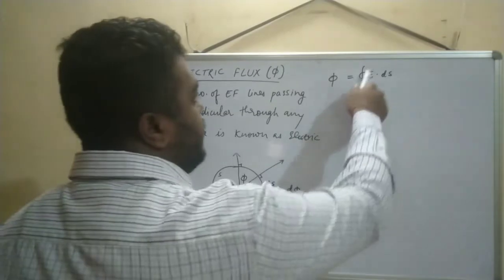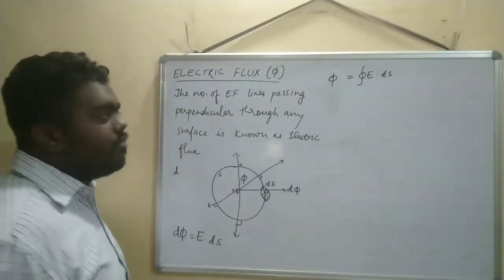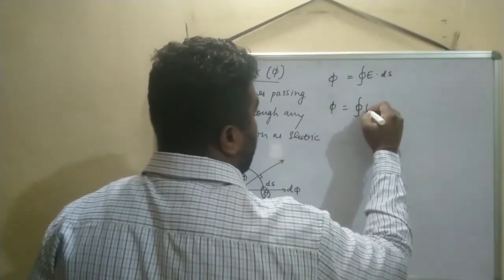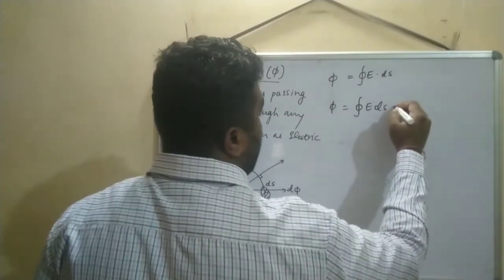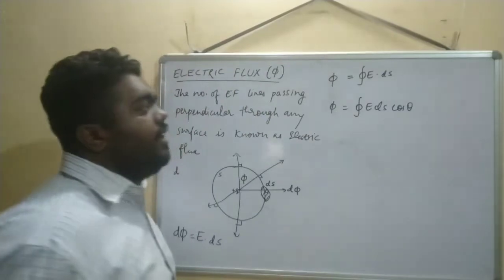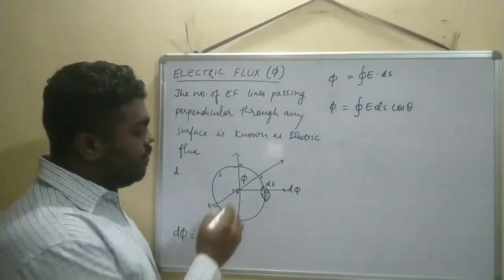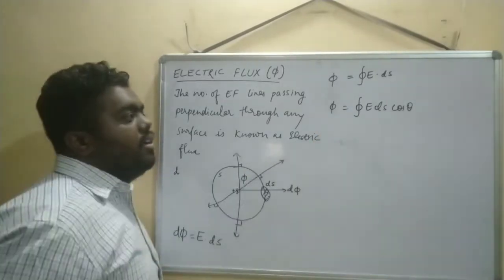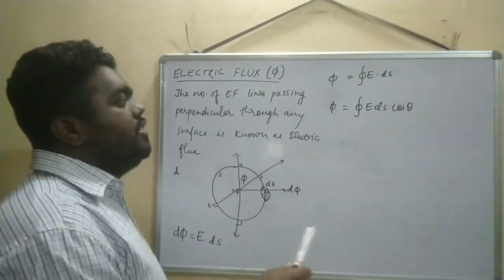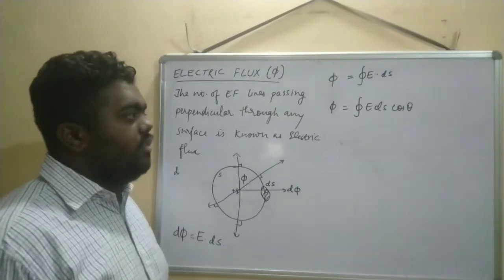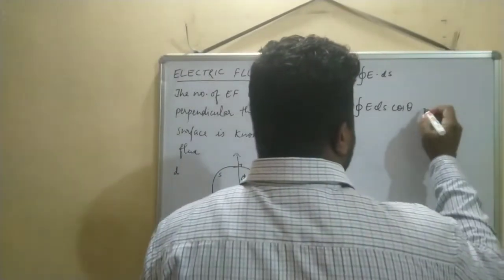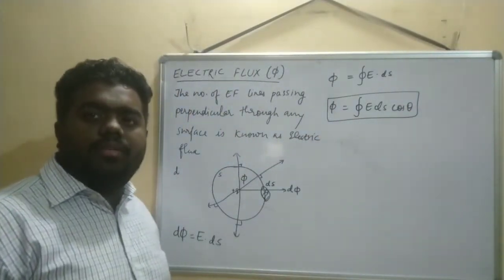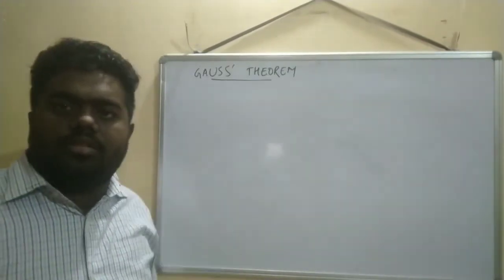We are integrating over the whole closed surface: Φ = ∮ E · dS. The dot product always signifies cos θ, so it becomes Φ = ∮ E dS cos θ. For example, if any flux makes an angle θ with the field, that angle is used. So Φ = ∫ E dS cos θ = ∫ E dS cos φ. This is our equation for electric flux.